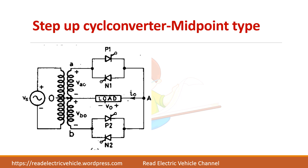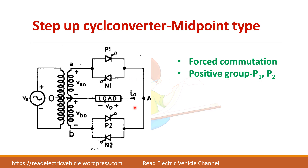In the midpoint type cycloconverter, the primary is connected to the source voltage and the secondary has a center tap — the midpoint of the secondary is where the load is connected. There are four thyristors, and in this type of step-up cycloconverter forced commutation is always used, meaning the thyristors are turned off using an external circuit. P1 and P2 represent the positive group; N1 and N2 represent the negative group, connected in anti-parallel.